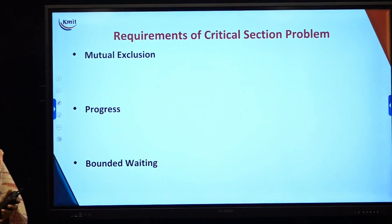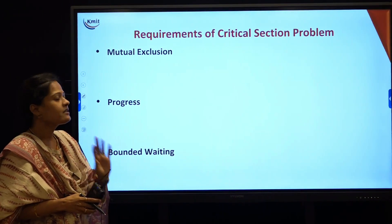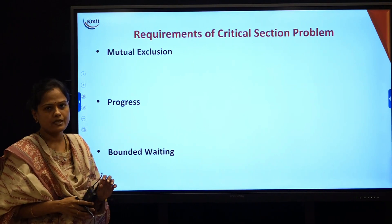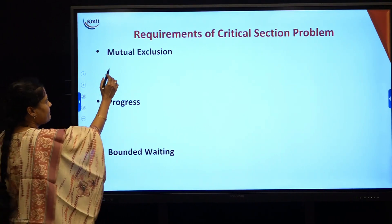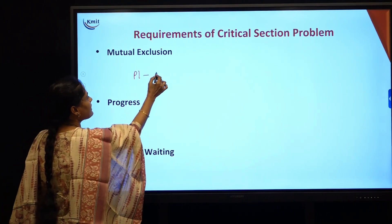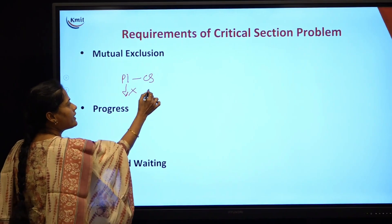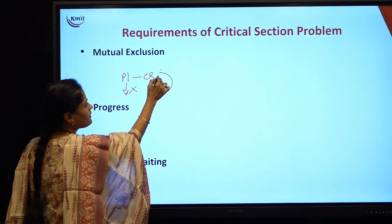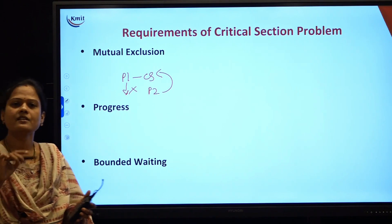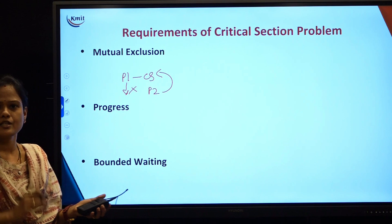To design protocols for the critical section problem, the three basic requirements are mutual exclusion, progress, and bounded waiting. As it implies, mutual exclusion means that if P1 is in the critical section, P1 will not allow any other process to enter the critical section. Only one process will be present in the critical section — one process excludes the other processes from entering.